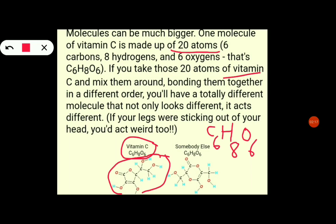This is the chemical symbol, and this is the chemical formula. The chemical formula tells us exactly how the atoms are arranged in the molecule.